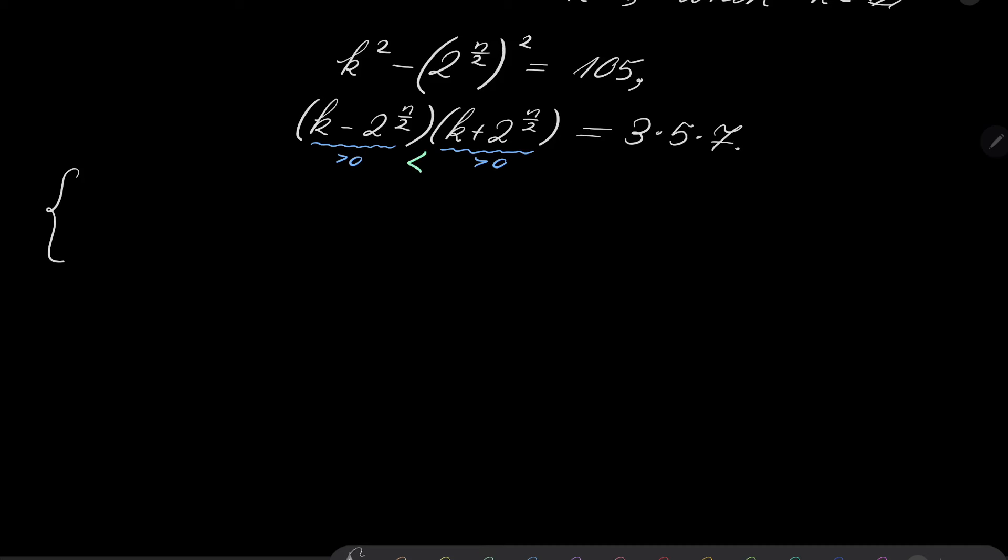Because of all of that, we have the following options. k minus 2 to the power of n over 2 equals 1, and k plus 2 to the power of n over 2 equals 105. It's one possibility. Or, k minus 2 to the power of n over 2 equals 3, and k plus this equals 35. Or, k minus 2 to the power of n over 2 equals 5, and the second number equals 21.